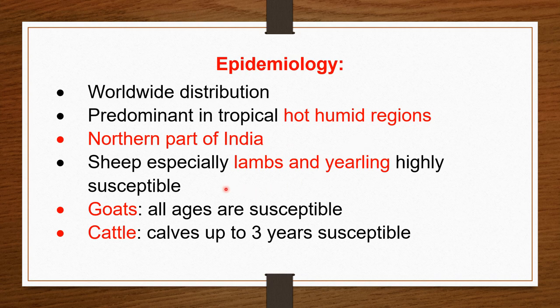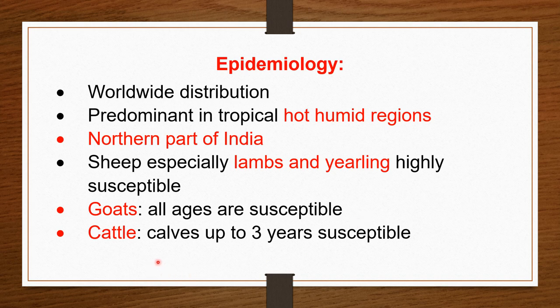Young lambs and yearlings of about one year are highly susceptible, causing great economic loss since these young lambs will become adults providing wool, milk, and mutton. In goats, there is no age discrimination — all ages are susceptible. In cattle, animals up to two to three years are susceptible, particularly heifers.